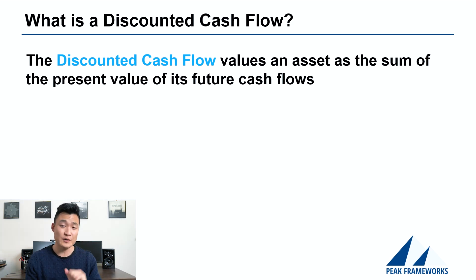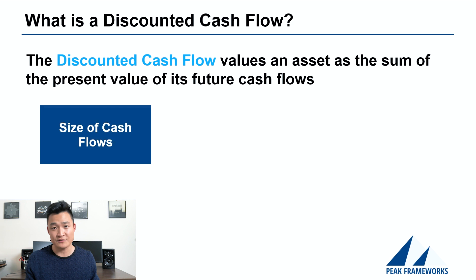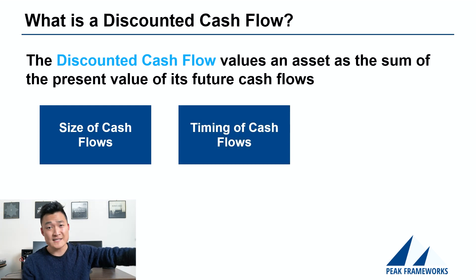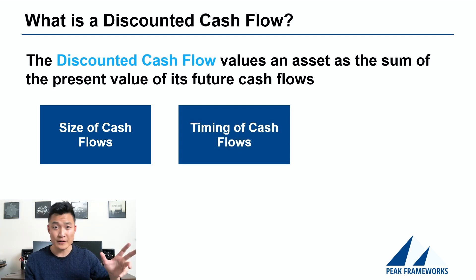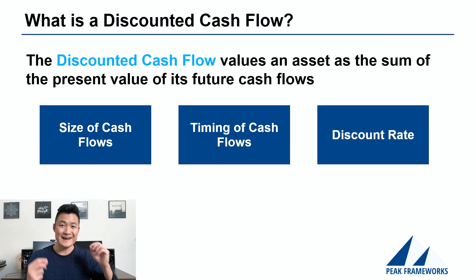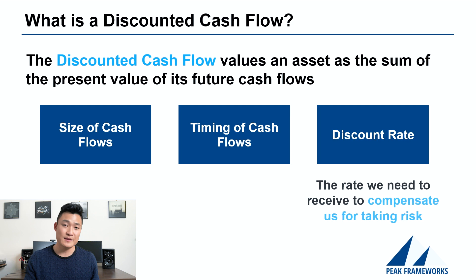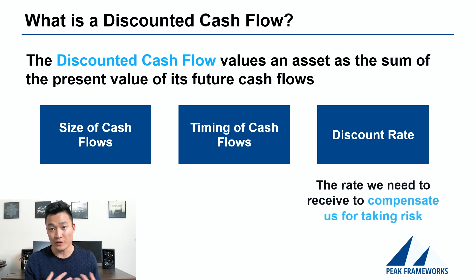There are three key variables in a DCF. First is the size of the cash flows — how much can you sell each apple for? In our example, it's $10. Second is the timing of the cash flows: the further out the cash flow is, the less valuable it is. Third is the discount rate — the rate needed to compensate us for that risk. This is the difference between that $100 maximum value and what we're actually willing to pay.